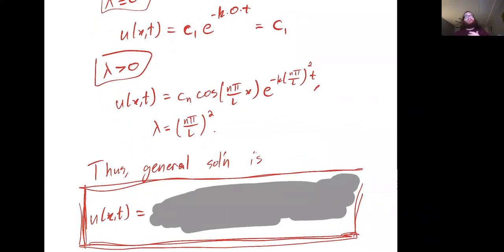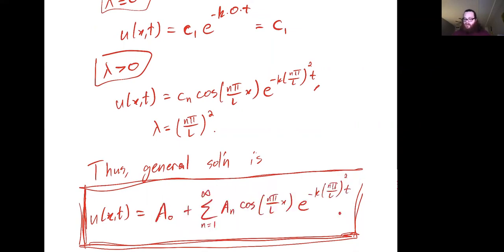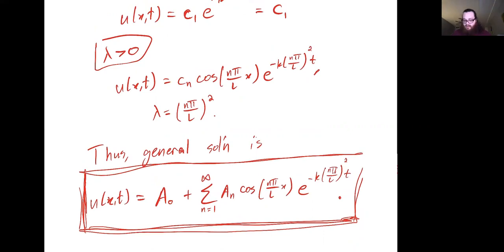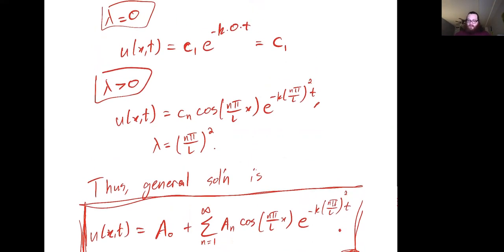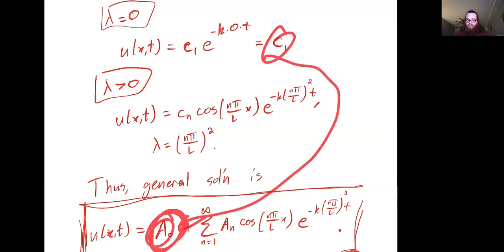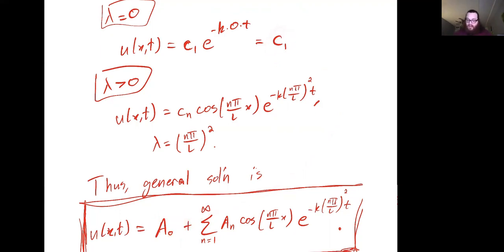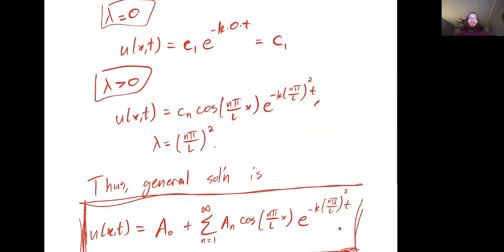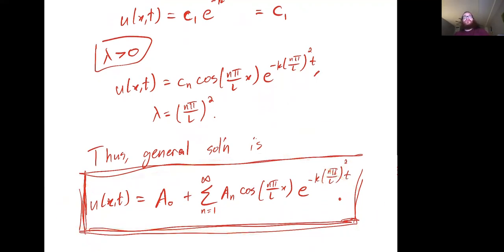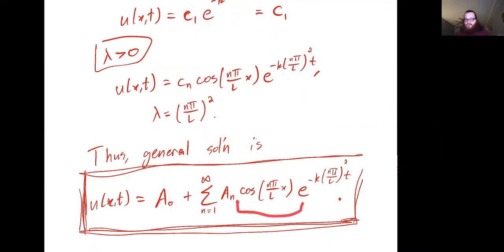Putting these together and taking an appropriate linear combination, we get our general solution: a constant term a₀ from λ = 0, plus a linear combination of cosine-times-exponential pieces. This is the most general form of the solution for this heat equation with these boundary conditions, before introducing the initial condition. Setting the derivatives to zero at the boundary gives cosines instead of sines, but we get a similar expansion of trig function times exponential.